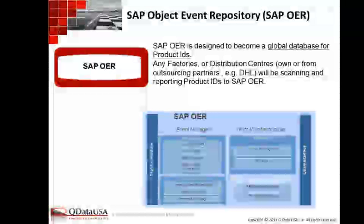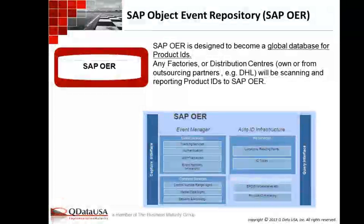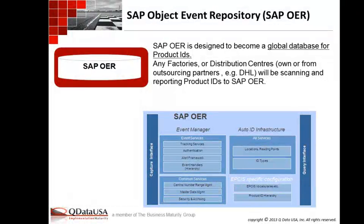Object Event Repository is another scenario delivered with event management, and it has its own components on top of event management — it's a separate install requiring a few extra components to enable, but the brains and meat behind it is just event management. There are a couple of visibility processes that enable it. If you want to track your serialized items, OER is the way to go, and the Product Tracking and Authentication scenario is the visibility piece you need.